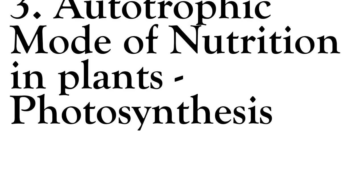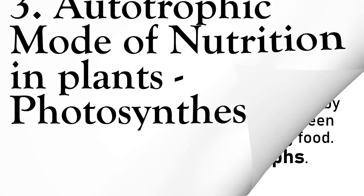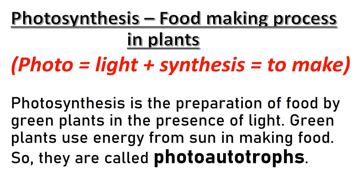The third topic is autotrophic mode of nutrition in plants: Photosynthesis. Photo means light and synthesis means to make. Photosynthesis is the preparation of food by green plants in the presence of light. Green plants use energy from sun in making food, so they are called photoautotrophs.